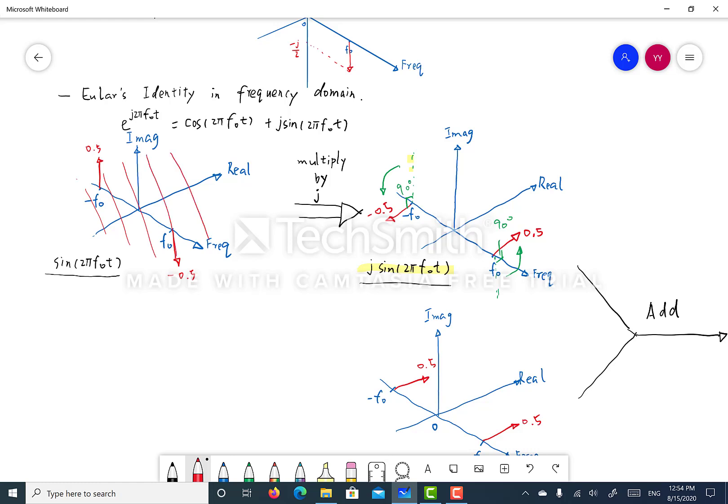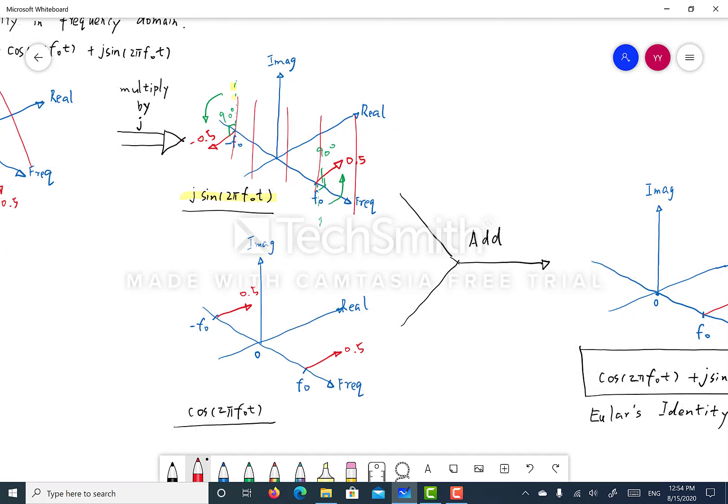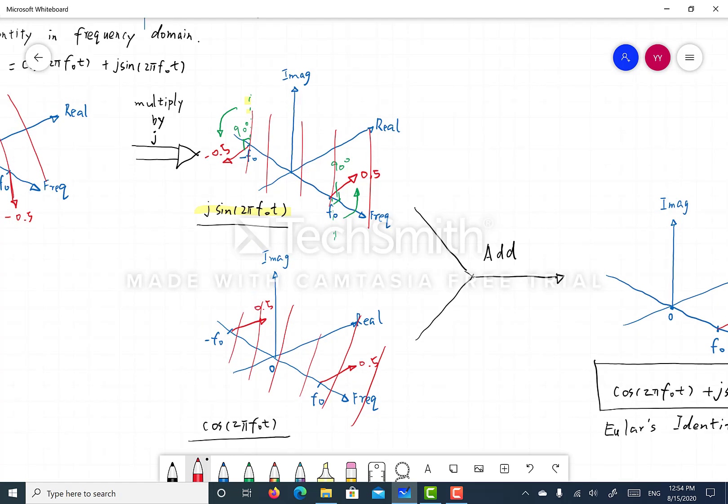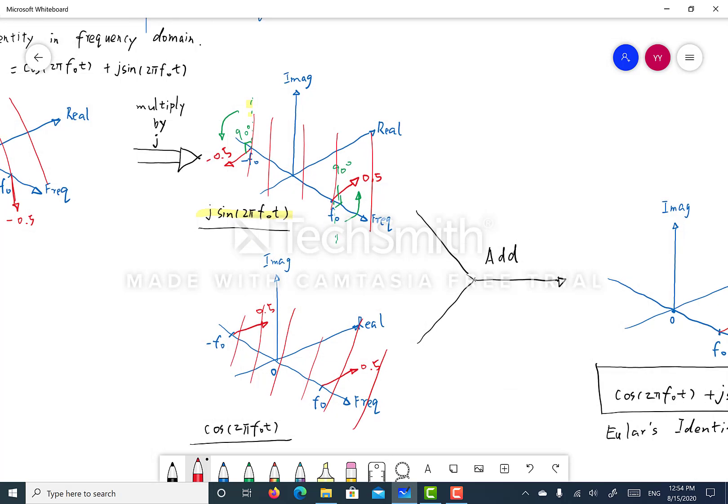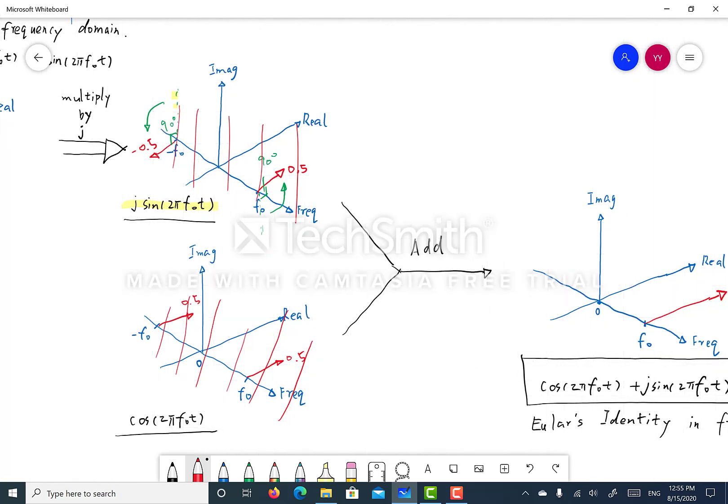But after the rotation, it occupies the plane that's perpendicular to the previous plane, which is the horizontal plane. And let's get back to the cosine wave frequency response. It occupies the horizontal plane. And because now the j sine 2 pi f0 t and the cosine 2 pi f0 t, they're occupying the same plane, we can actually do algebra. We can add them.